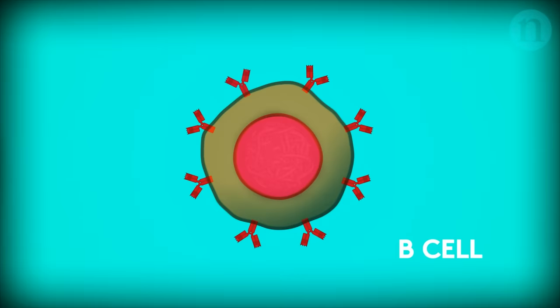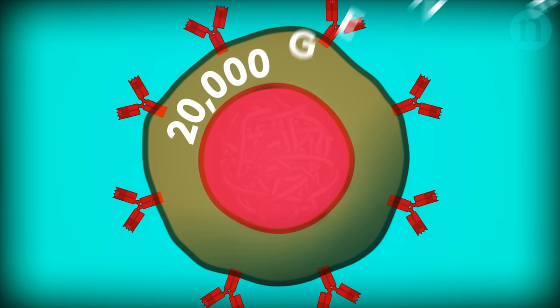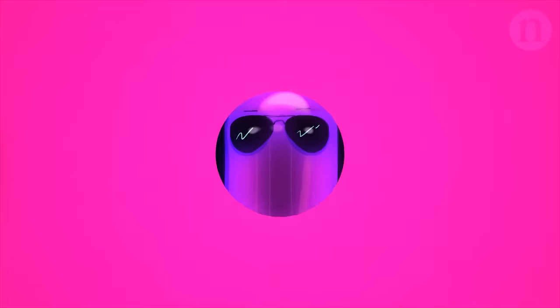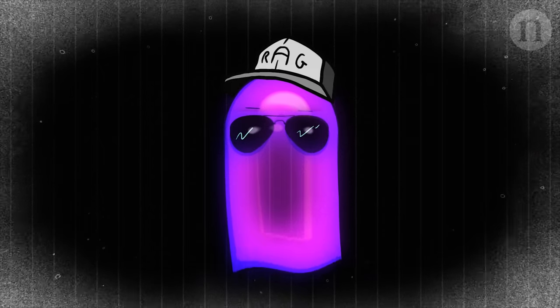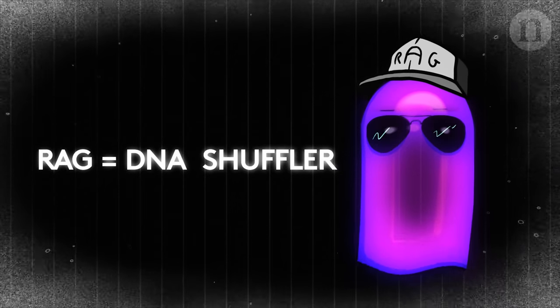Antibodies are made by B-cells. Like every other cell, B-cells start off with the same 20,000 genes. But they also have an enzyme called RAG. RAG is a DNA shuffler. It targets the genes that make the antibody's binding site.